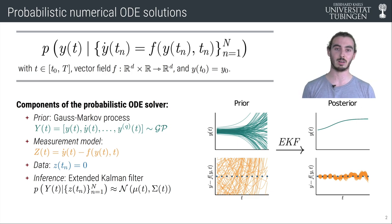A prior chosen as a Gauss-Markov process is related to the solution of the ODE with a non-linear measurement model and artificial zero data points. The posterior distribution can then be efficiently computed with Bayesian filtering techniques such as the extended Kalman filter.